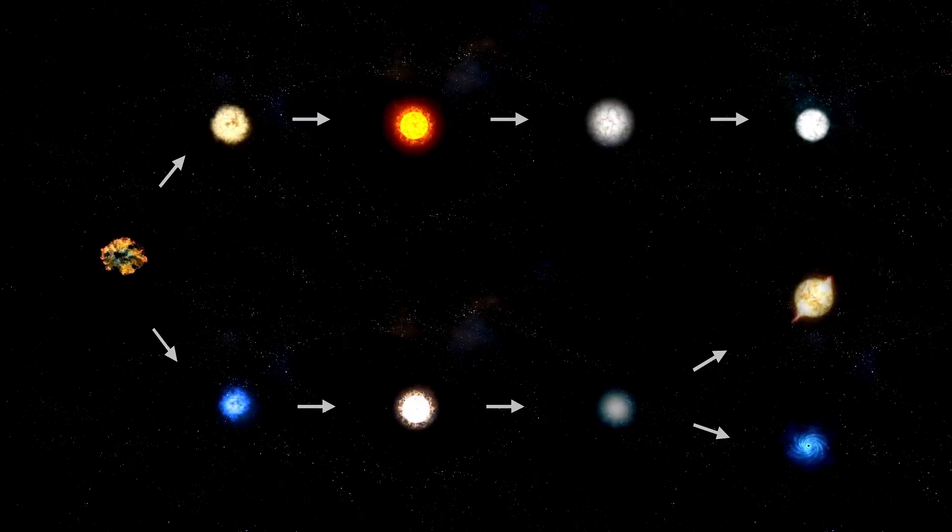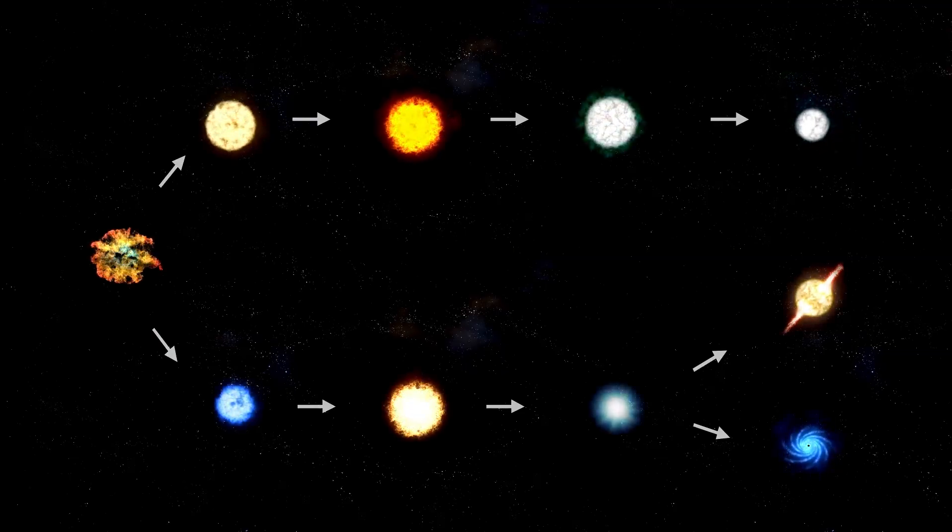During the transit, the JWST captured the light passing through K2-18b's atmosphere. The beauty of this technique lies in the unique fingerprint that the starlight carries. By analyzing this fingerprint, scientists can determine the elemental composition of the planet's atmosphere. This allows them to identify the molecules present and gain insight into the planet's environment.